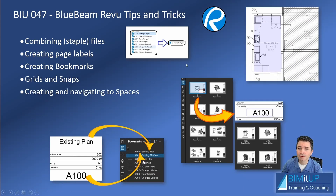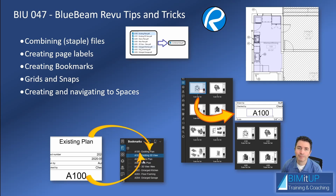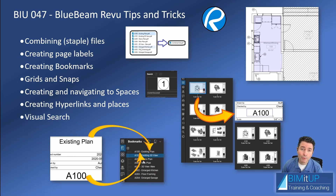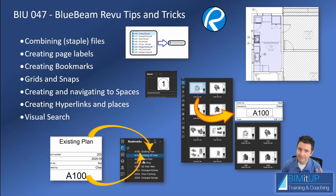Grids and snaps allow us to create what are called spaces, so you can navigate directly to a particular area of a PDF. We're also going to create some hyperlinks and places, and then I'll show you how to perform a visual search — so if you have a certain graphic and want to find where else it's repeated within your PDF, you can find all instances with one click. This could be a symbol, a sink, a lavatory, a toilet, a door — whatever you want.